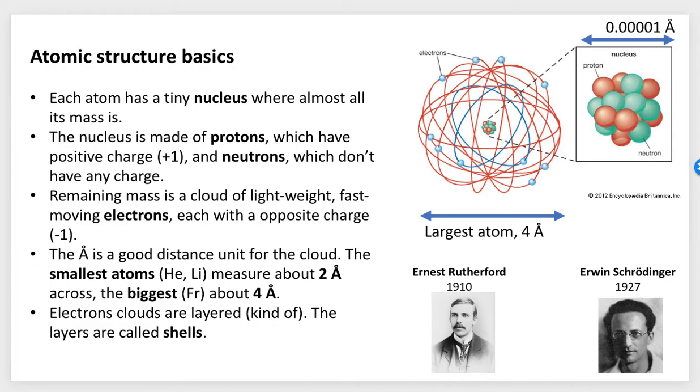Each atom has a tiny nucleus where almost all the mass of the atom is. That nucleus, if you look at it closely, is made up of protons and neutrons. The protons have a positive charge and the neutrons don't have any charge at all.